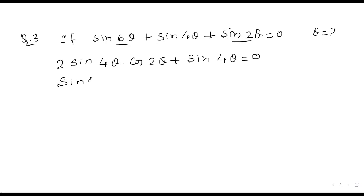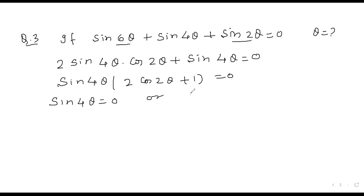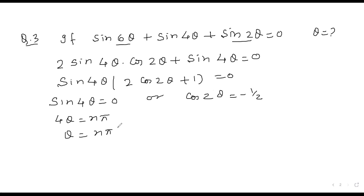Taking sin 4θ as common factor, we get sin 4θ (2 cos 2θ + 1) = 0. So either sin 4θ = 0 or cos 2θ = −1/2. From sin 4θ = 0, we get 4θ = nπ, so θ = nπ/4.